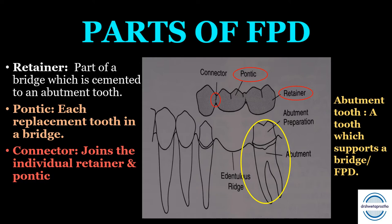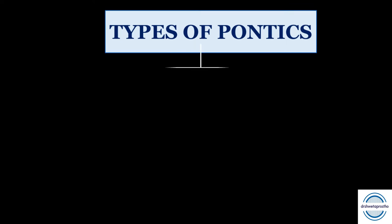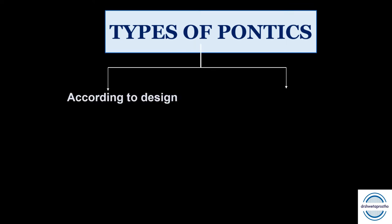This is one of the MCQ questions which is asked. The pontics are the artificial teeth of the FPD or fixed partial denture that replace the missing natural teeth, restoring function and appearance. The classification of pontics is very important — they can be classified according to design and according to the material they are made of.